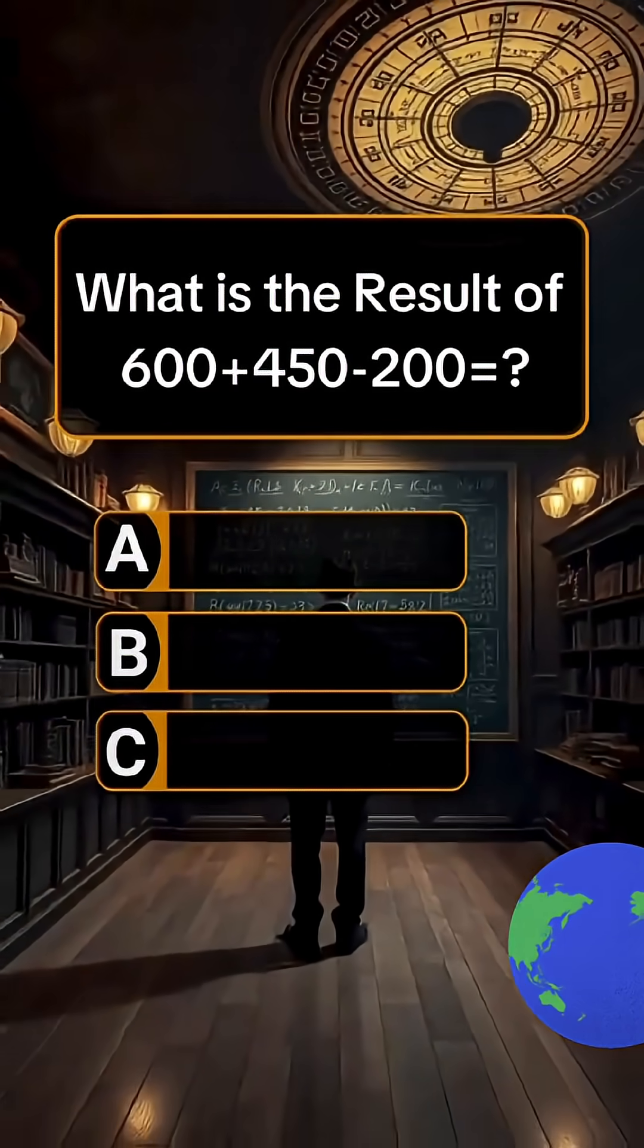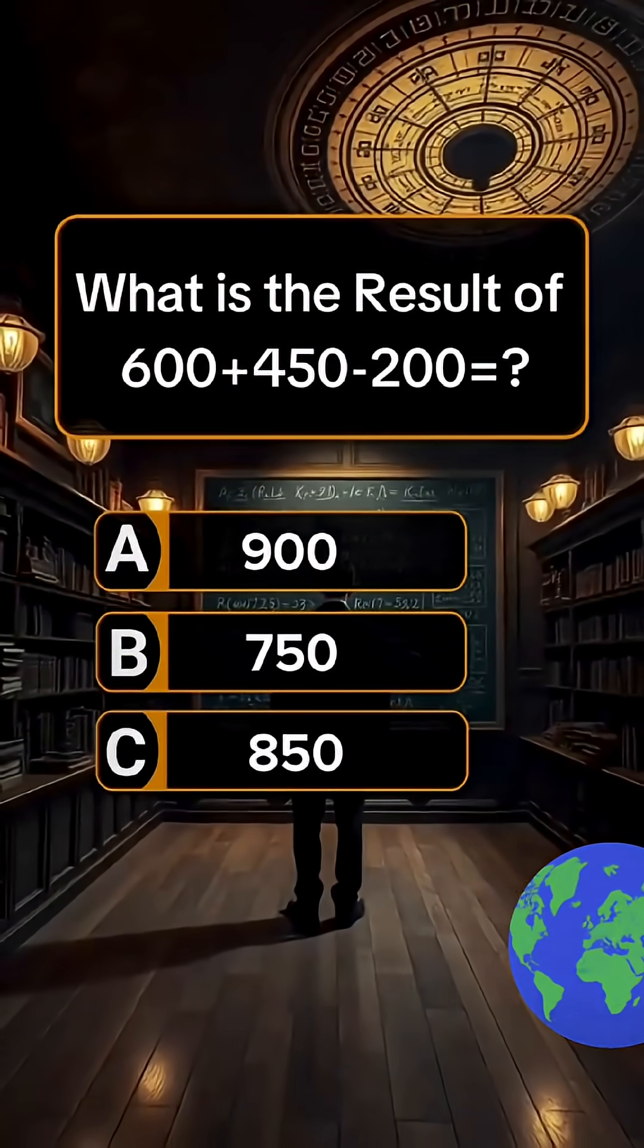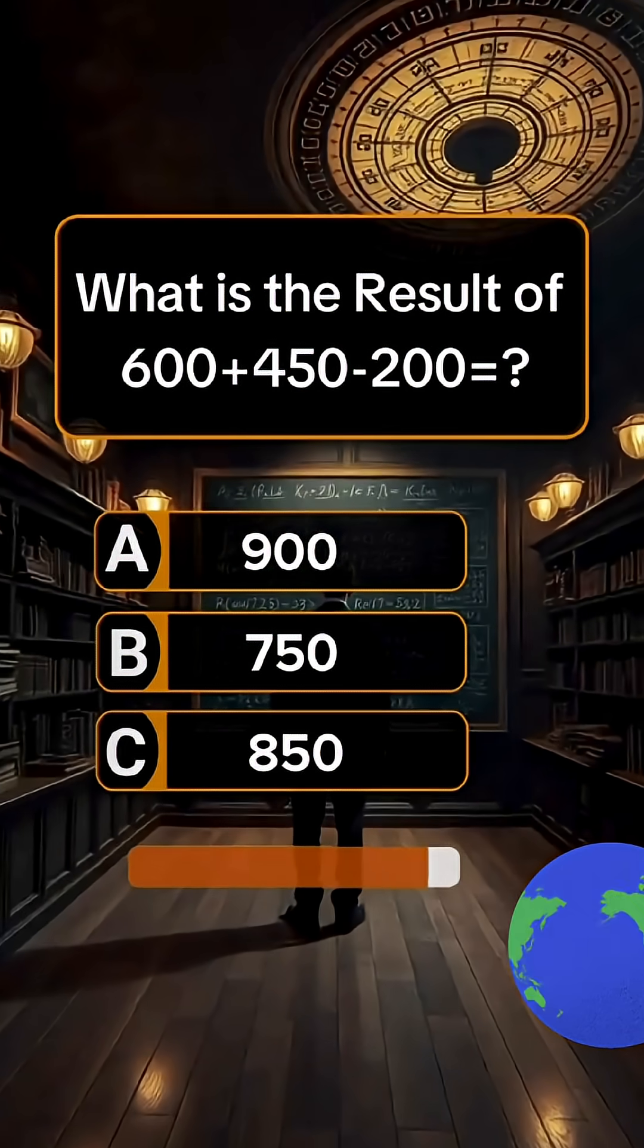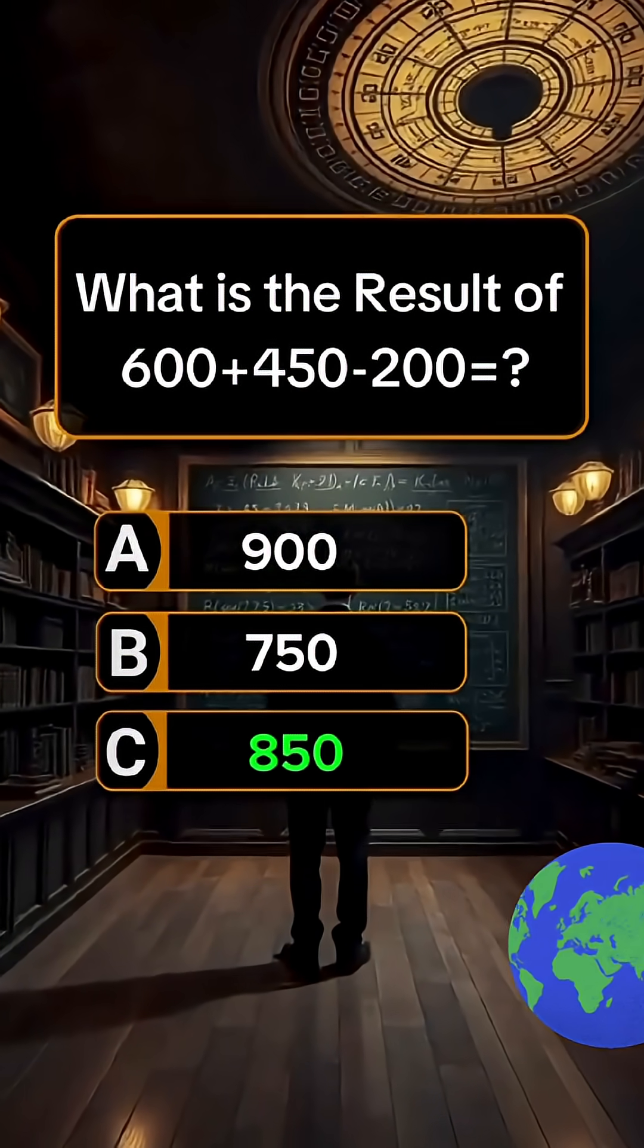Question 2. What is the result of 600 plus 450 minus 200? Answer C. 850.